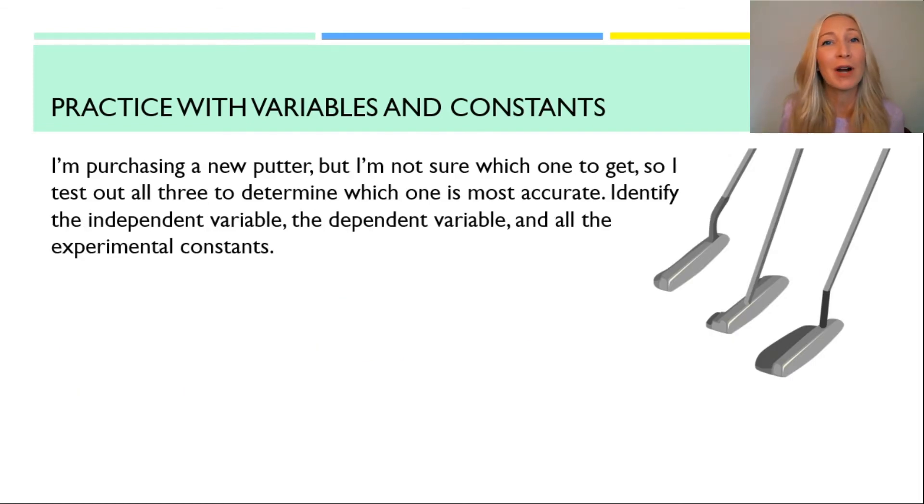So now I want you to try a problem on your own. I'm purchasing a new putter, I'm a golfer and I really need to work on my short game. I think that purchasing a new club will help me out a lot, but I'm not sure which one to get. So I test out all three of these different putters and I want to determine which one is the most accurate, which one will get my ball closest to the hole, if not in the hole, which would be ideal. So what I want you to do is identify the independent variable, the dependent variable, and try to list as many constants as possible.